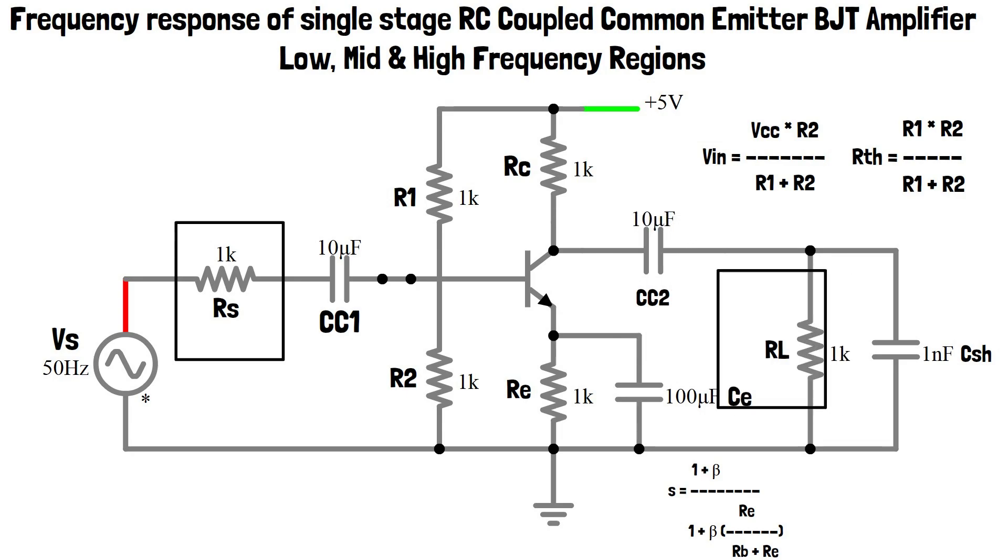CI is called as internal parasitic capacitance due to BJT. CSH is shunt capacitor. It is used to get the desired bandwidth.